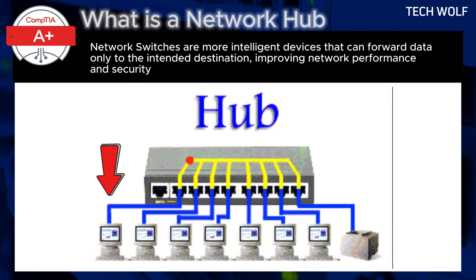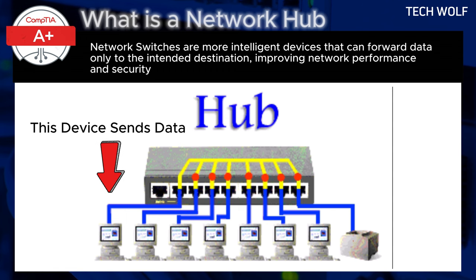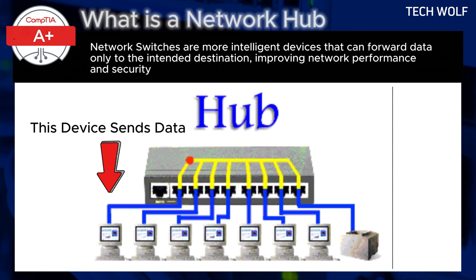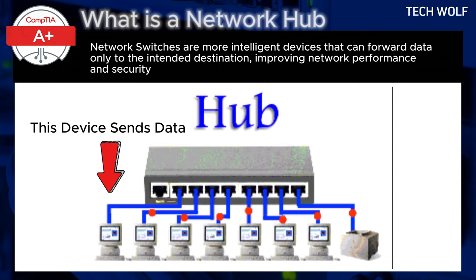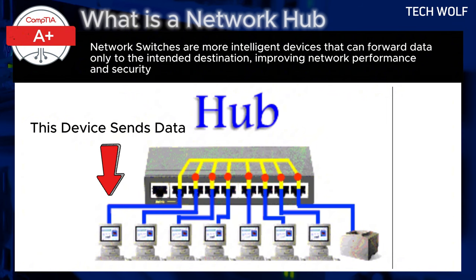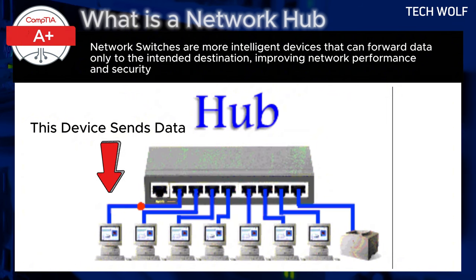When a device sends data, the hub receives it and broadcasts it to all connected devices. This means that all devices on the network receive the same data, regardless of whether it's intended for them or not.